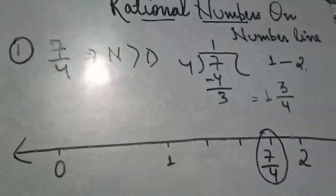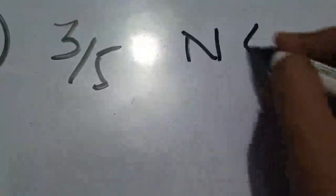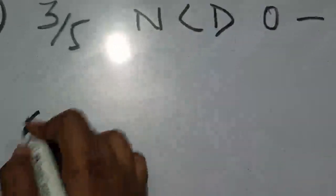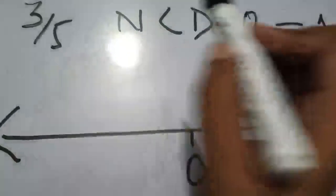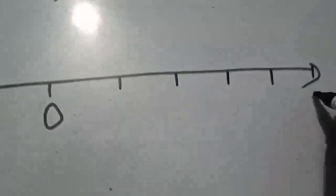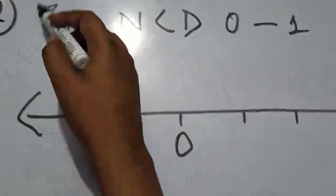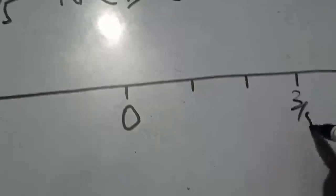Next part — 3 by 5. Value kaise hai? Numerator 3 chota hai denominator 5 se. To pehli condition: jab bhi numerator chota hoga denominator se, 0 aur 1 ke beech mein lie karega. Jaldi se number line banao, 0 dikhao. Denominator mein 5 hai, to 5 parts mein divide karo: 1, 2, 3, 4, 5. Ab kitna aage badhna hai — numerator 3: 1, 2, 3. Yahan pahunch gaye. To yahan 3 by 5 aa jaayega.